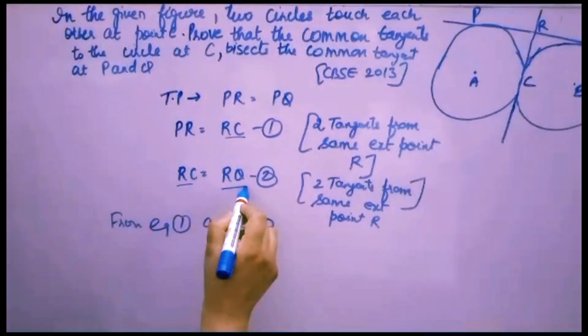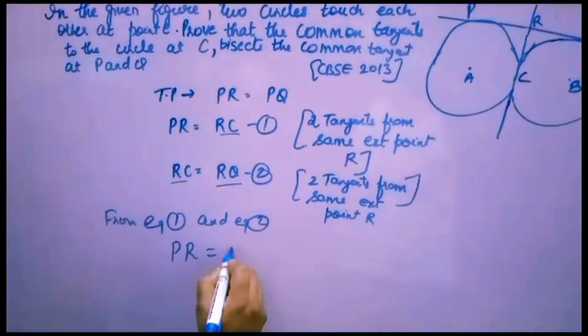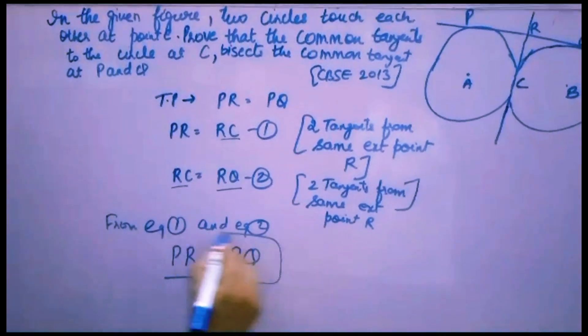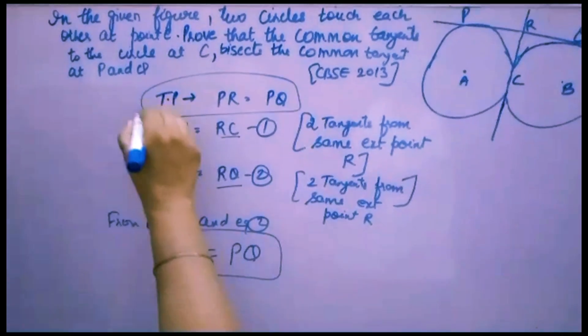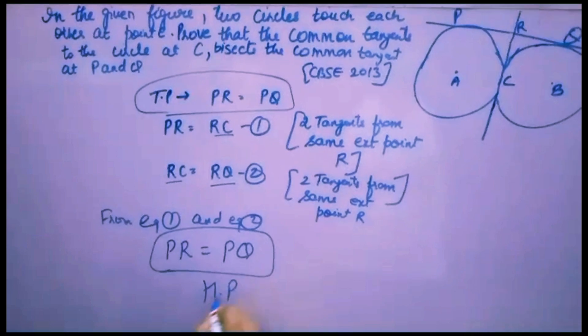That means PR is equal to RQ. This is what you have to prove. So you will write hence proved. Thank you.